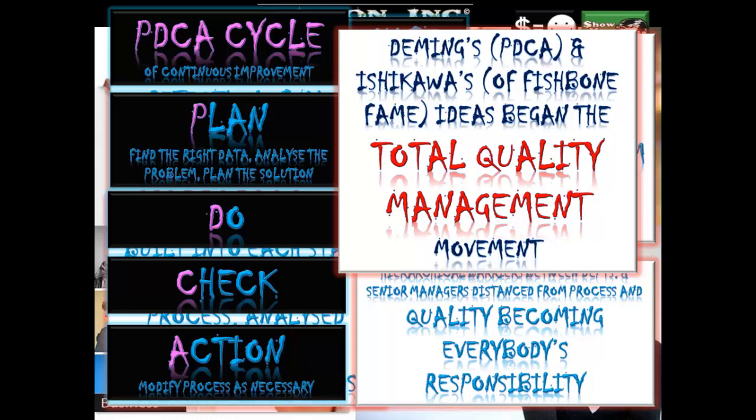Two important names here: Deming from the PDCA cycle, and Ishikawa of fishbone fame. These guys began the total quality management movement — the shift away from quality control.